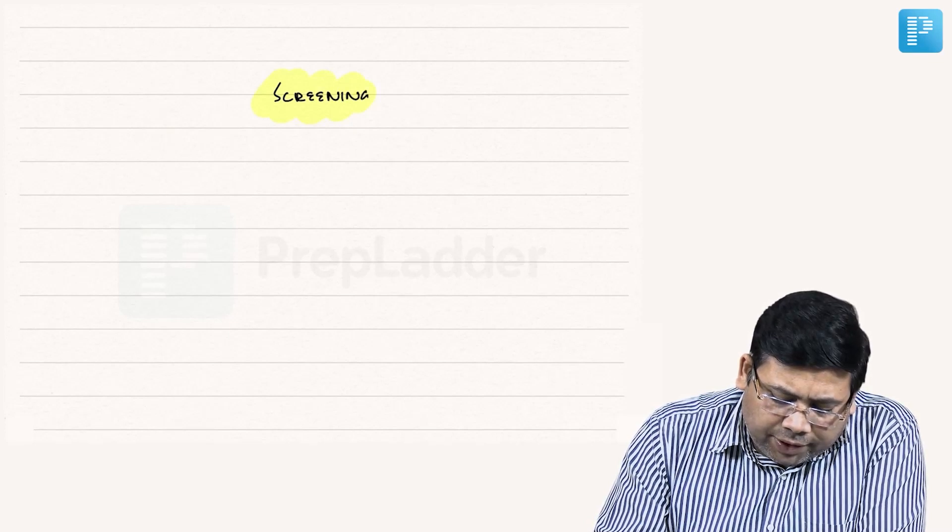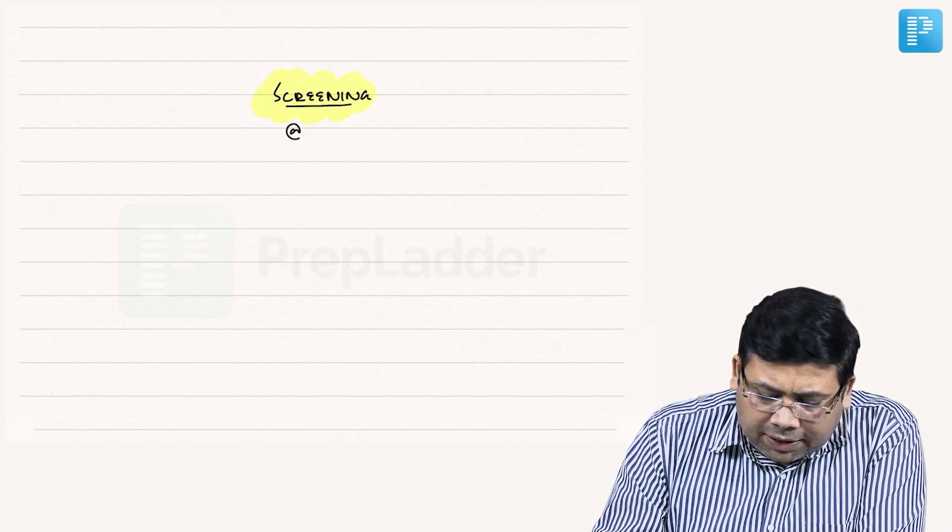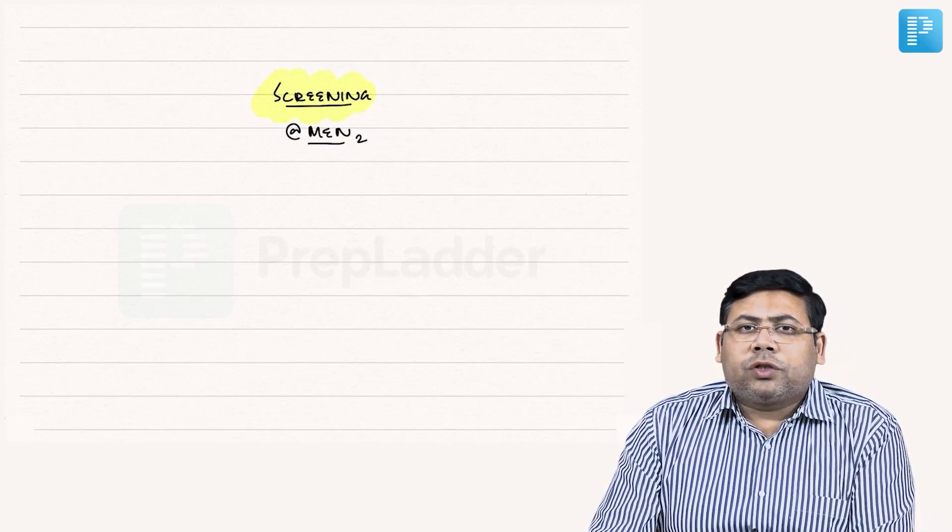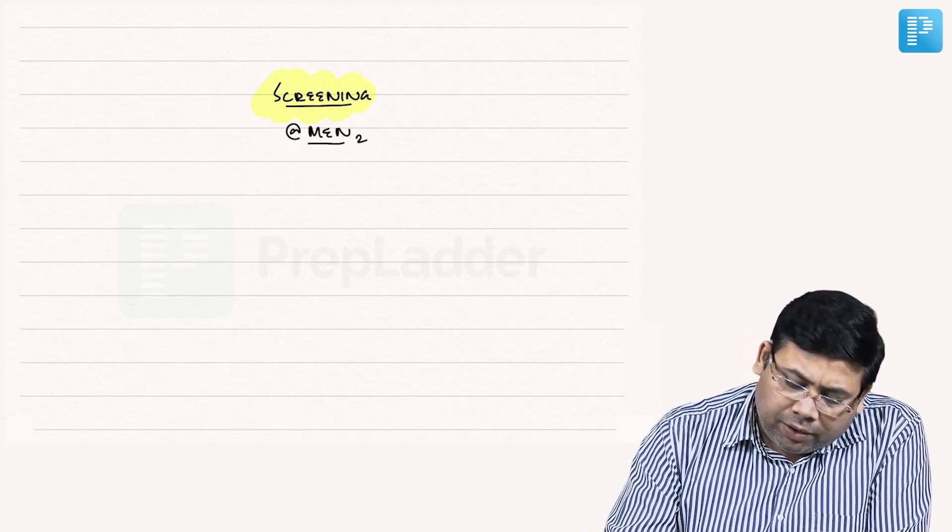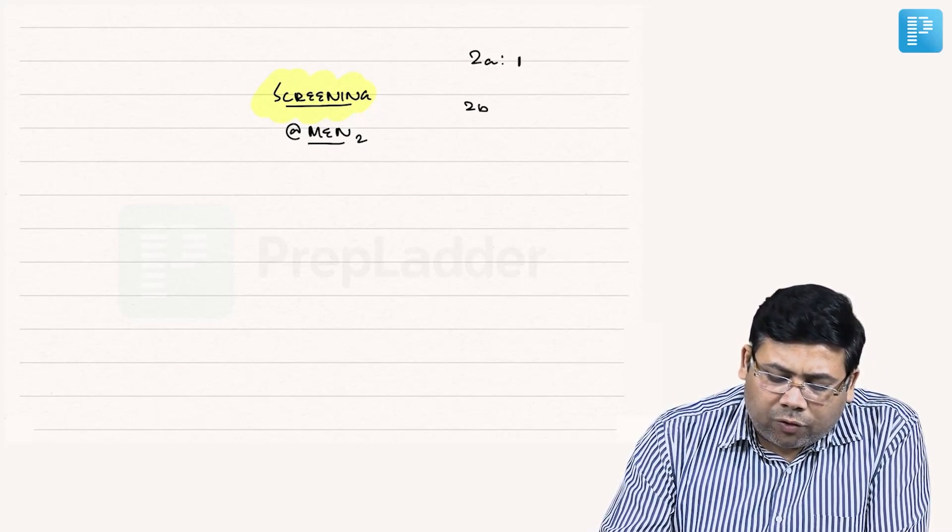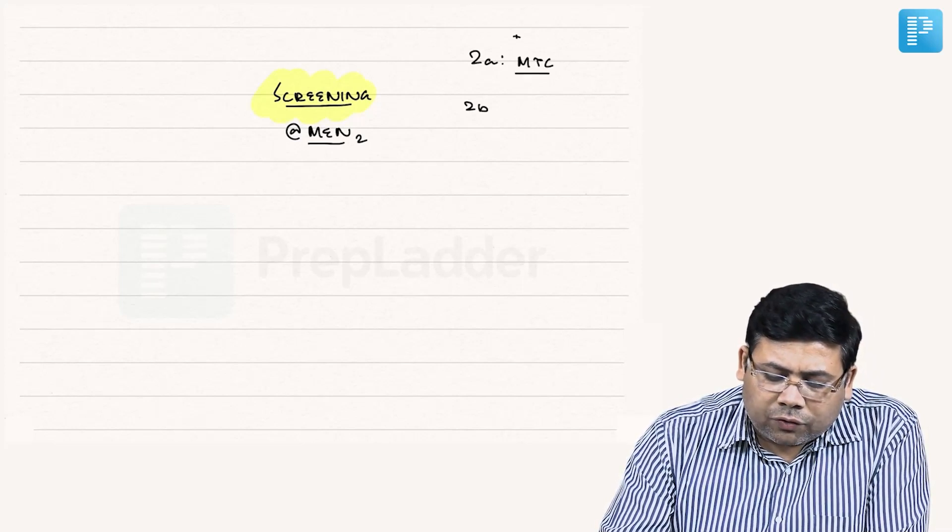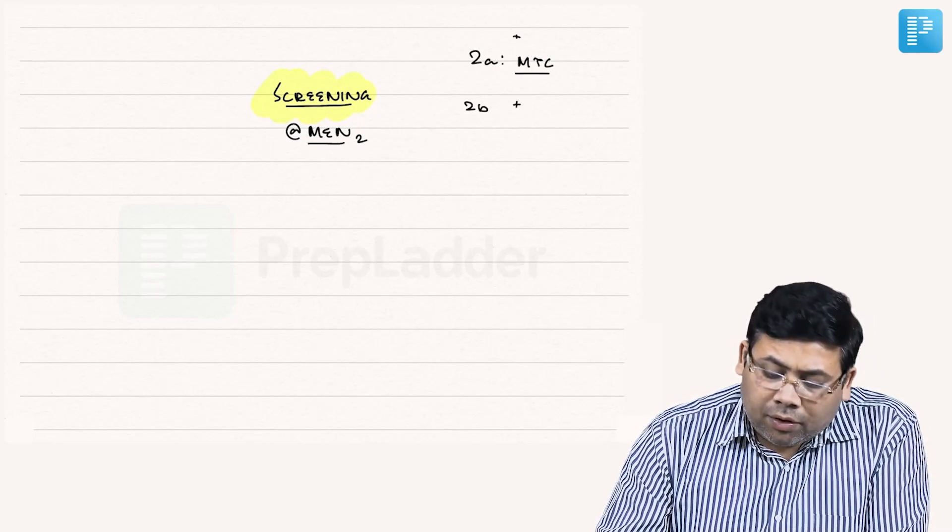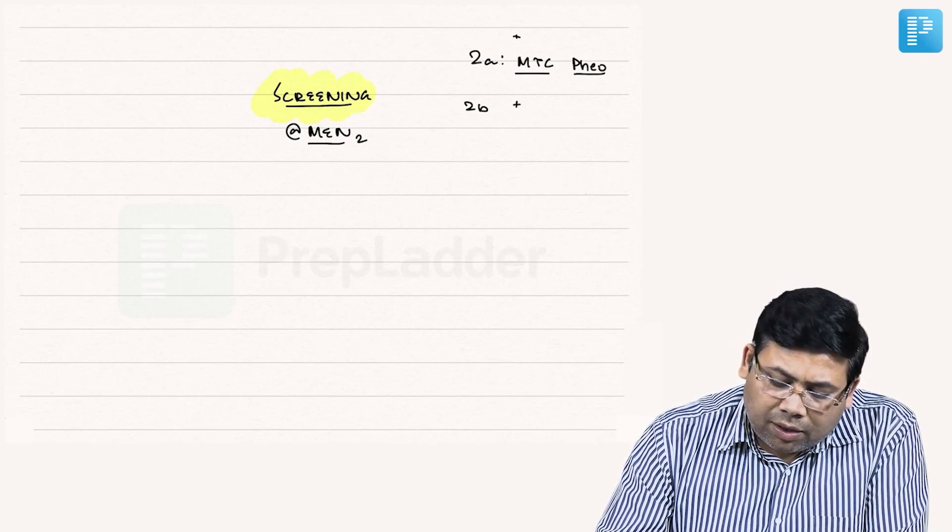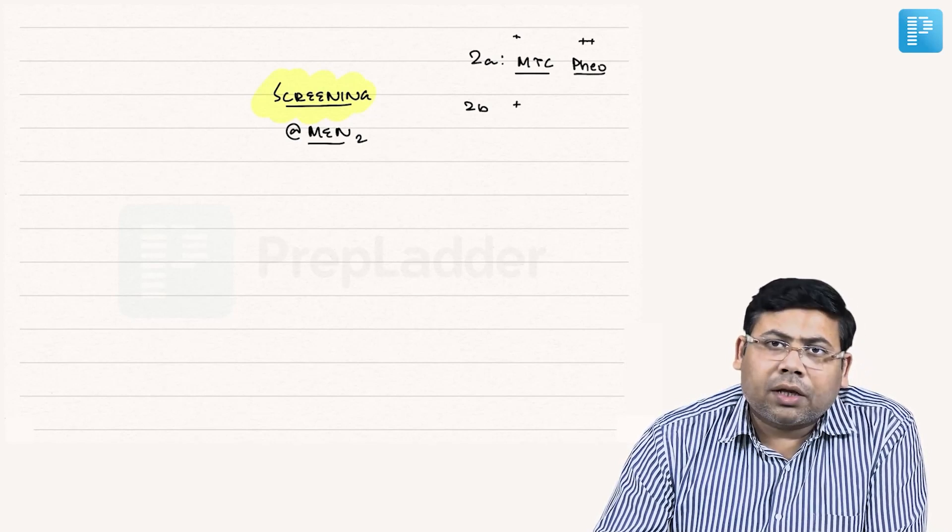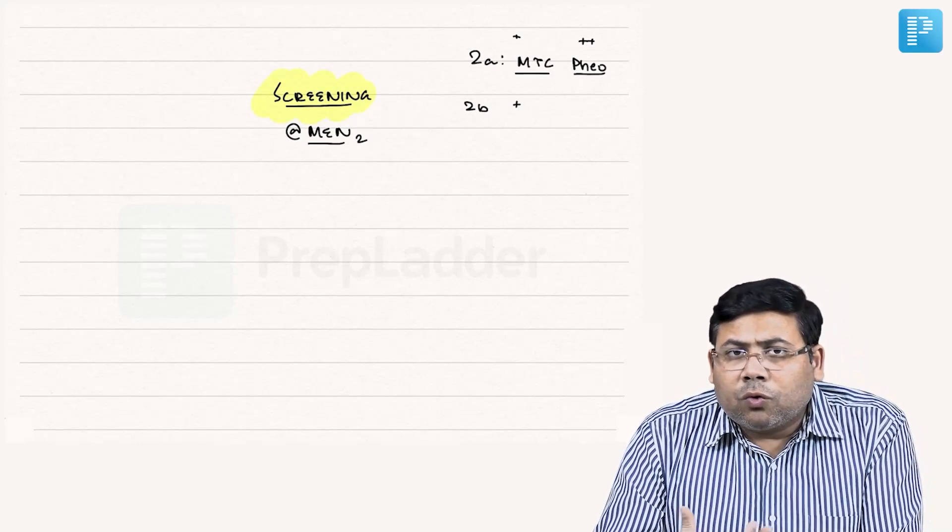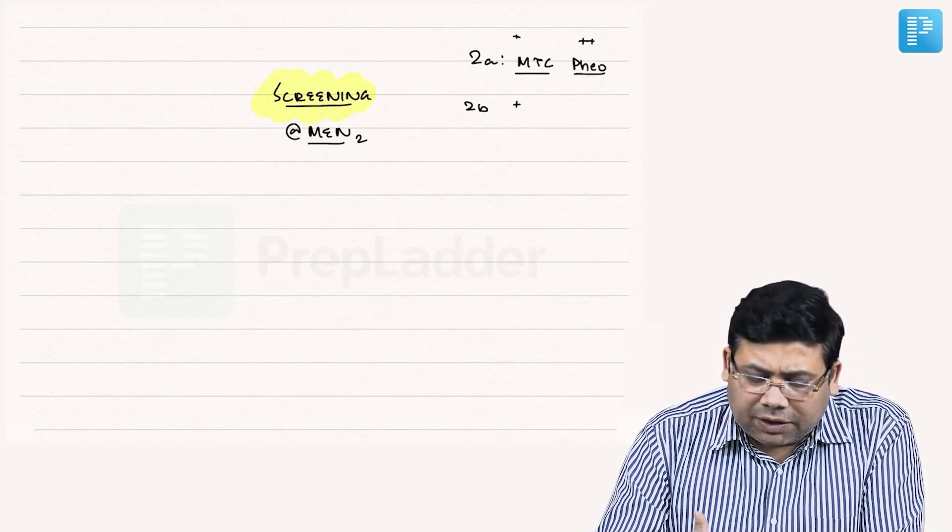MEN2 is of two types: 2A and 2B. In 2A we have MTC, in 2B we also have MTC. We also have pheochromocytoma as a part of 2A, and some parathyroid abnormalities, mucosal neuromas, Hirschsprung disease - a lot of things are there.